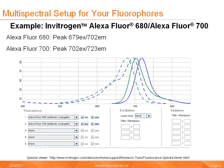Alexa 680 and Alexa 700 have closely overlapping spectrums. Alexa 680 has a peak excitation and emission of 679 and 702, shown in the graph below as green. Alexa 700 has a peak excitation and emission of 702 and 723 respectively, shown in blue in the graph below.